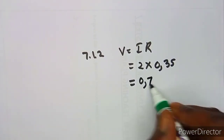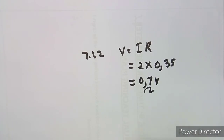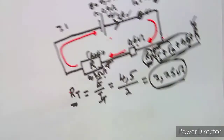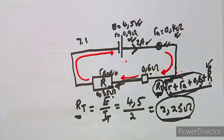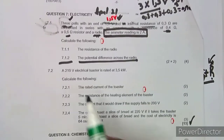That gives us 0.7 volts. So the potential difference across the radio is 0.7 volts. That's how they ask these questions.